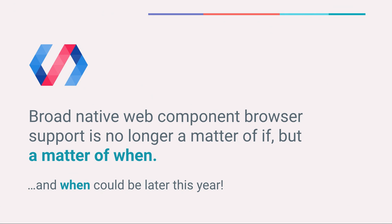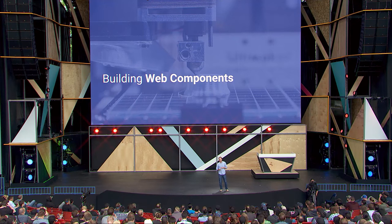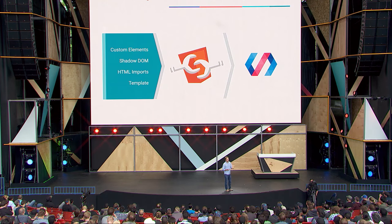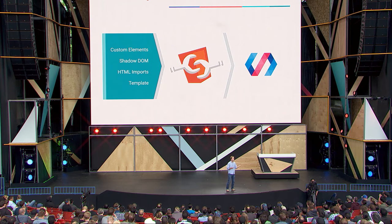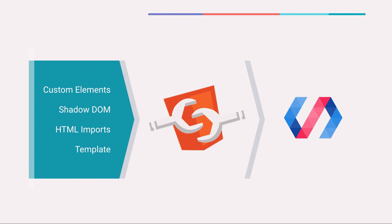In the past when we've talked about web components here at I.O., they certainly have been on the bleeding edge of web development. And now web components are just on the leading edge of web development. Web components are actually four lower-level specs, and they're great, but they can be a little hard to figure out how to actually build and encapsulate. So we built the Polymer library to make it easier to use these four specs together to create your own web components.